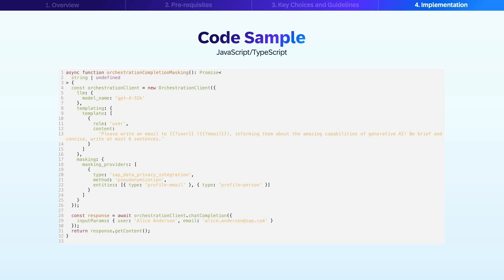Let's look at a practical example of how to implement AI model access using JavaScript. This code sample demonstrates the simplicity of using the orchestration client to interact with AI models. First, we create an orchestration client object with GPT-4.0 as our large language model, a template, and masking configuration. Then, choose the type as SAP Data Privacy Integration, and the method as pseudo-anonymization, which represents the personal data with placeholders. We then use the orchestration client we created to send the prompt to the large language model. Finally, we retrieve the response with the get-content method. This straightforward implementation demonstrates how easily you can access powerful AI capabilities through SAP AI Core using just a few lines of code.